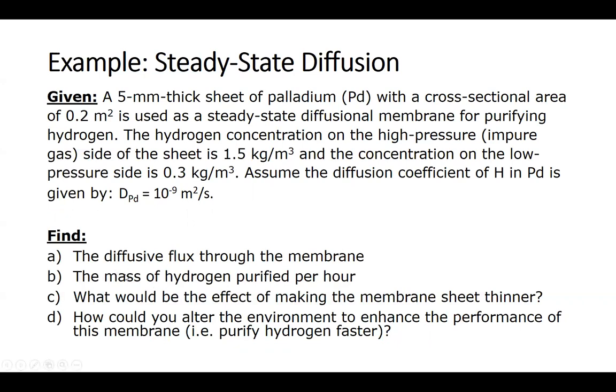We have four things that we want to focus on finding. The first is just the diffusive flux through the membrane. The second is the mass of the hydrogen purified per hour. We also want to find out what would be the effect of making the membrane sheet thinner, and finally, if we could alter the environment to enhance the performance of the membrane, what would we do to it? How would we purify hydrogen faster?